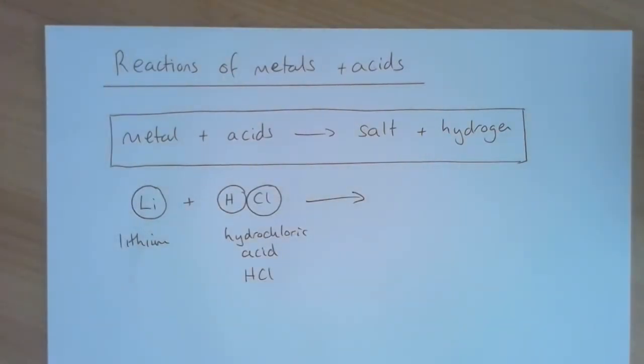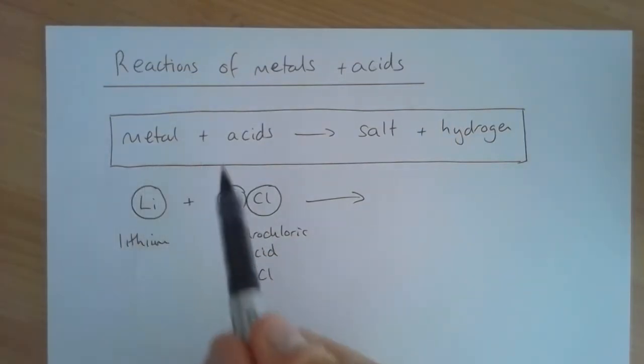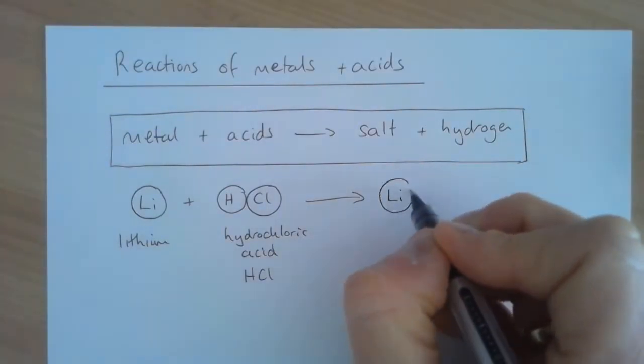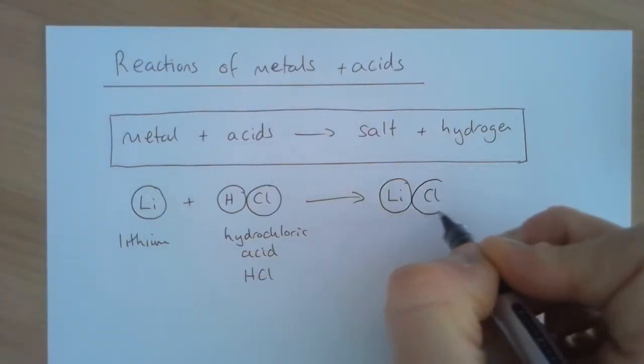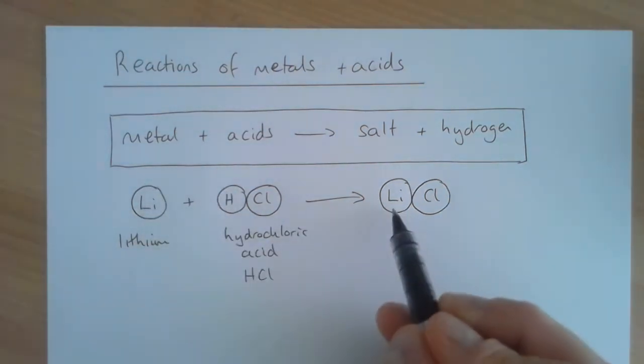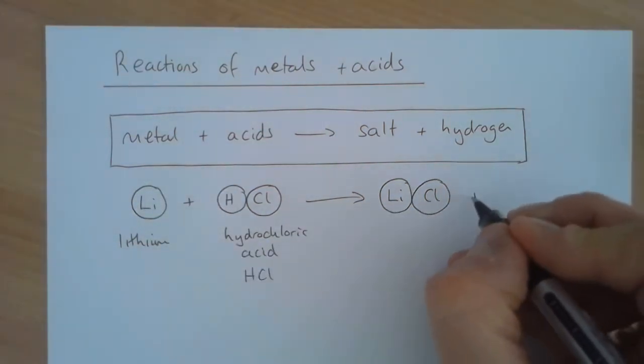The salt that's formed is when we replace the hydrogen that's in the acid with a metal ion, and that's the definition of a salt. When we replace the hydrogen in an acid with a metal ion, the salt formed is lithium chloride. We replace this hydrogen with the lithium, so we make lithium chloride and it produces hydrogen gas.